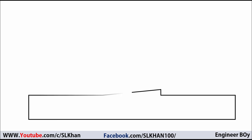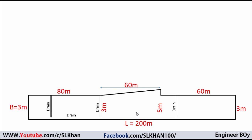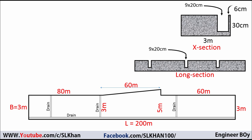We have some drawings related to a street, and this is a PCC street having length equals 200 meters and breadth equals 3 meters. There is an extension of 2 meters overhead, making this portion a trapezium in the plan. There are also drains — one longitudinal and three transverse — and the drawings include a cross section and long section.